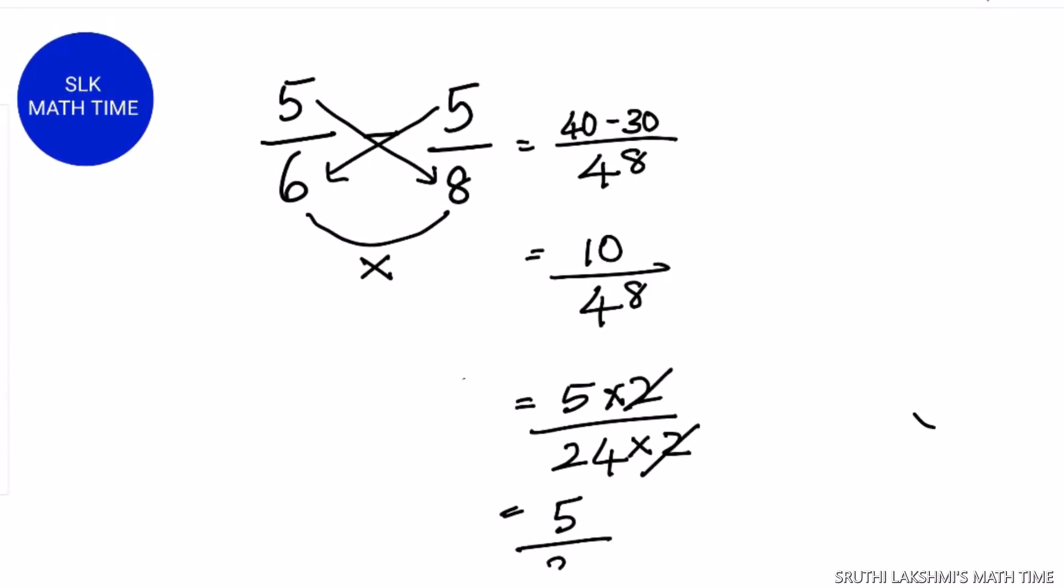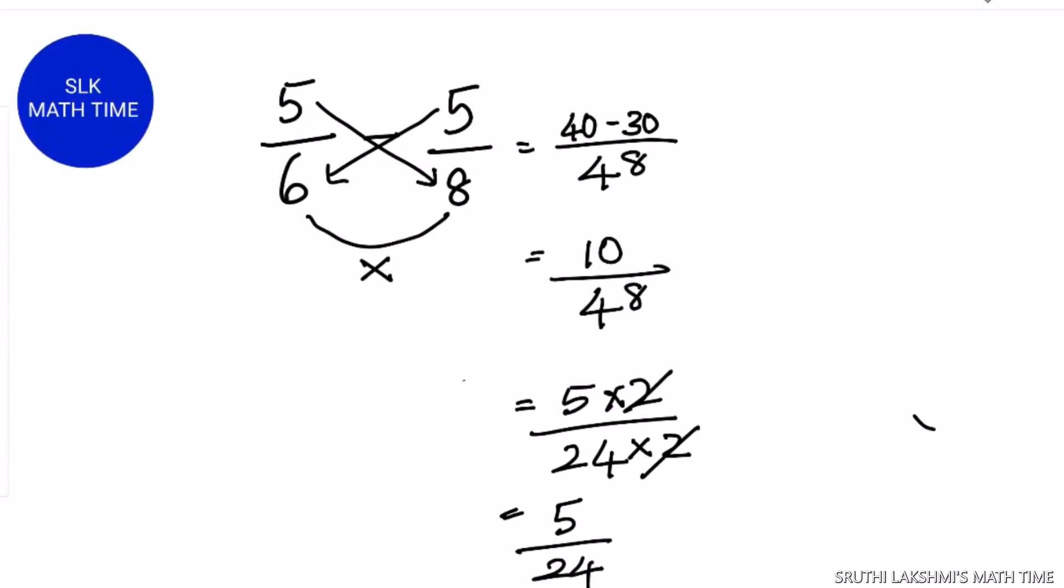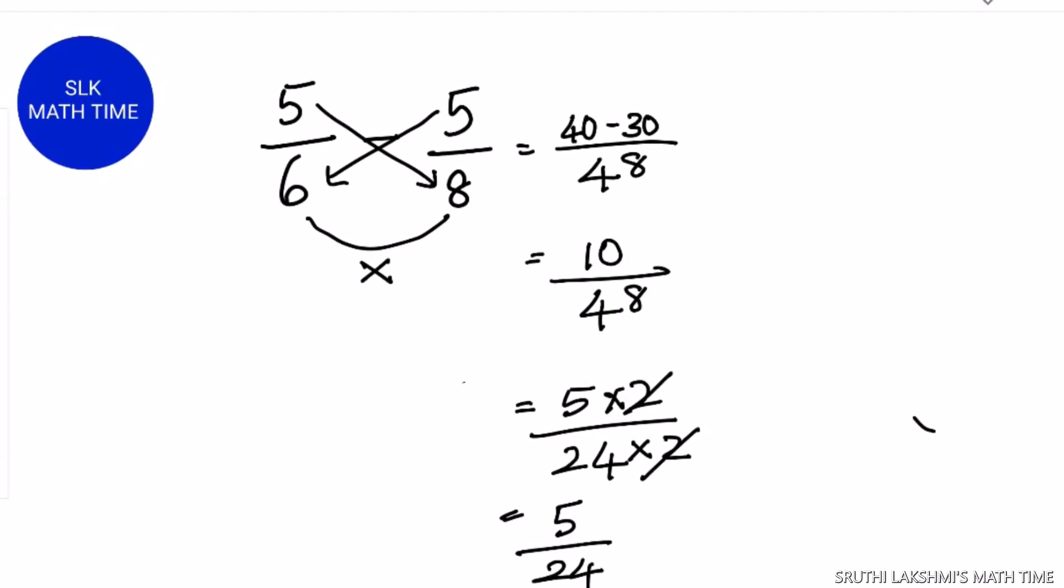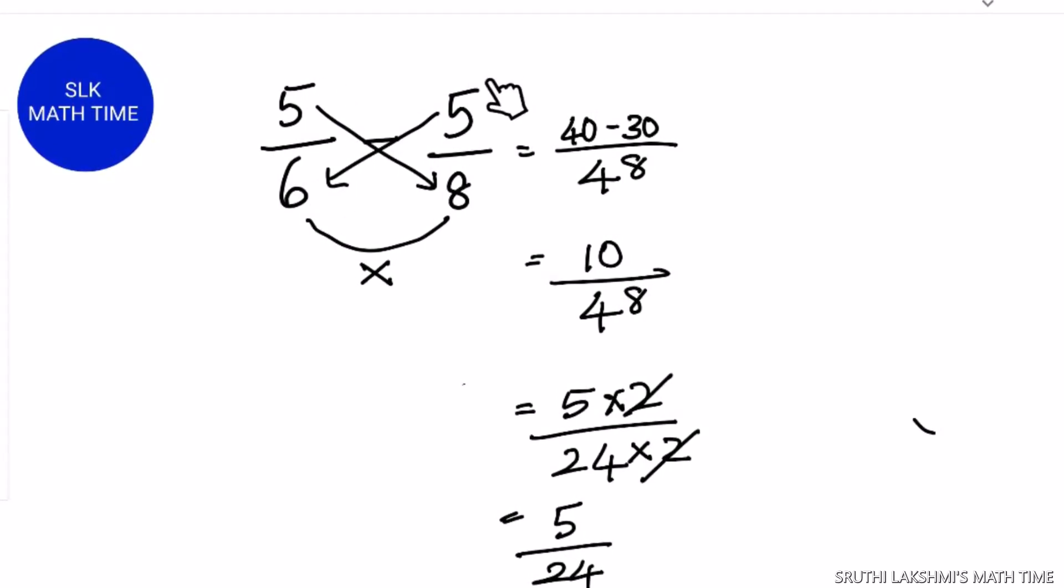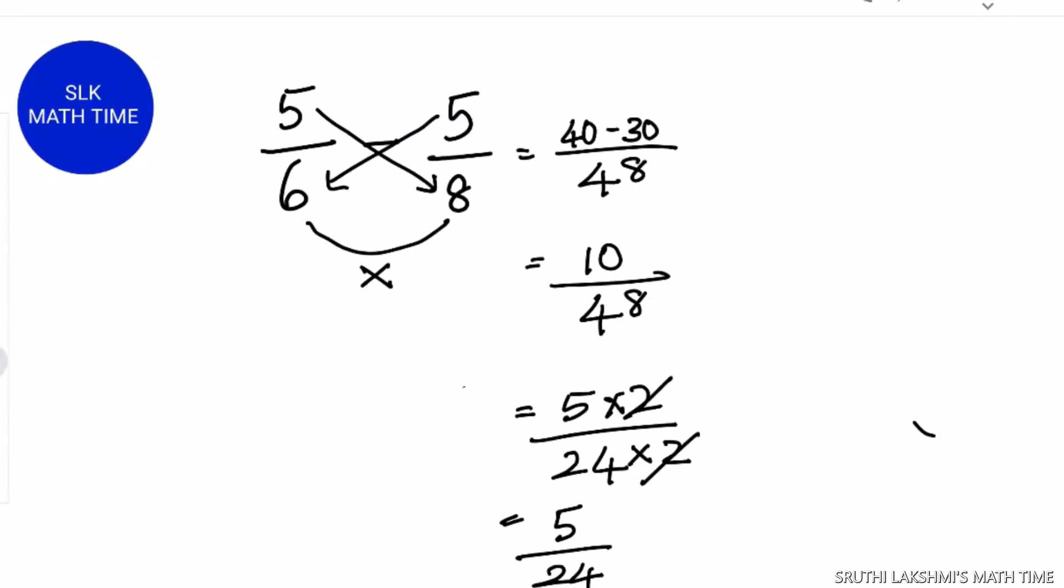And the final answer is 5 by 24. So 5 by 6 minus 5 by 8 is 5 by 24.